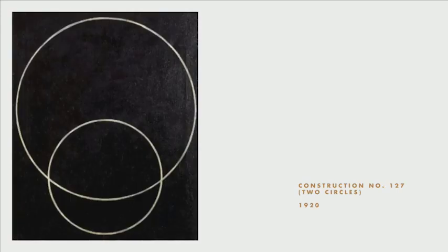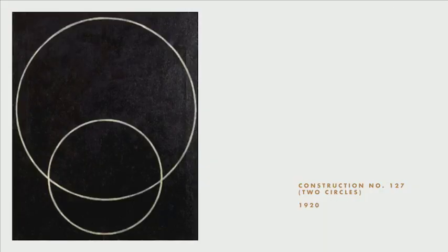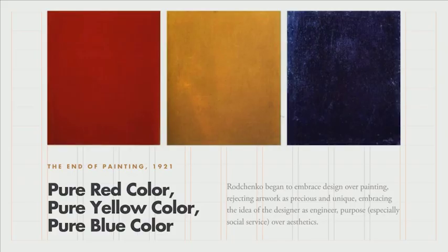And you can see that in one of his next works — this is 1920. This is where we start to bring about his transformation into constructivism. Very simple, bold shapes and lines. And you can kind of see the final transformation in his fine art with this pure red color, pure yellow color, pure blue color piece of work that he dubbed the end of painting in 1921. These three monochromatic squares — he basically claimed that he had reduced painting to its core, and this was his expression of that.